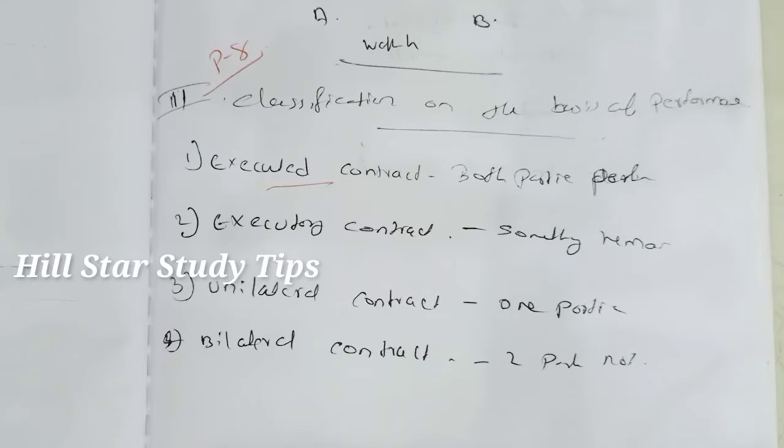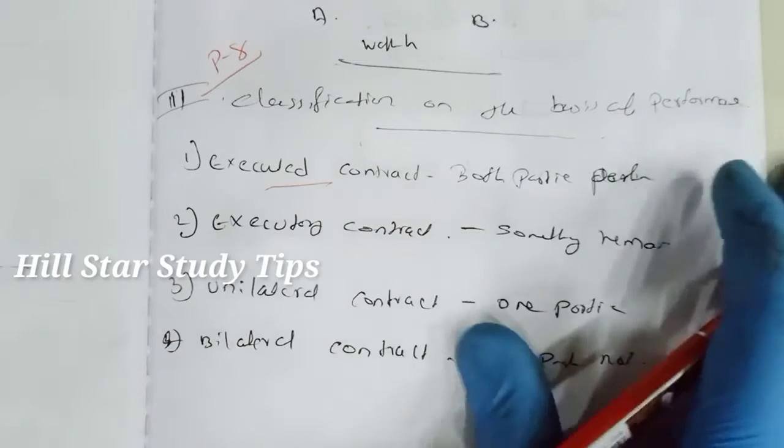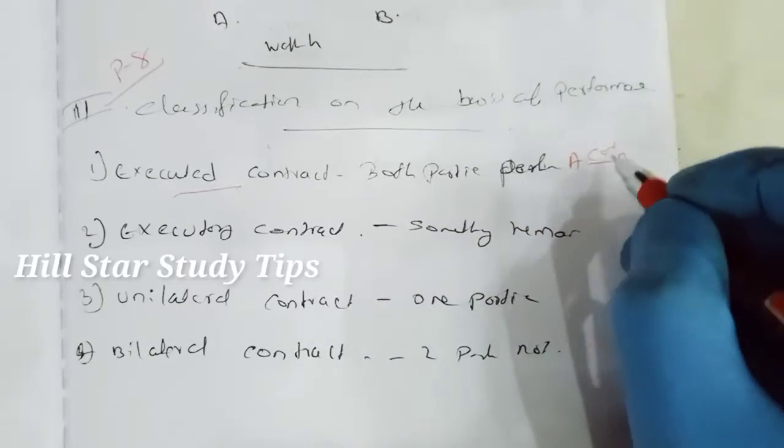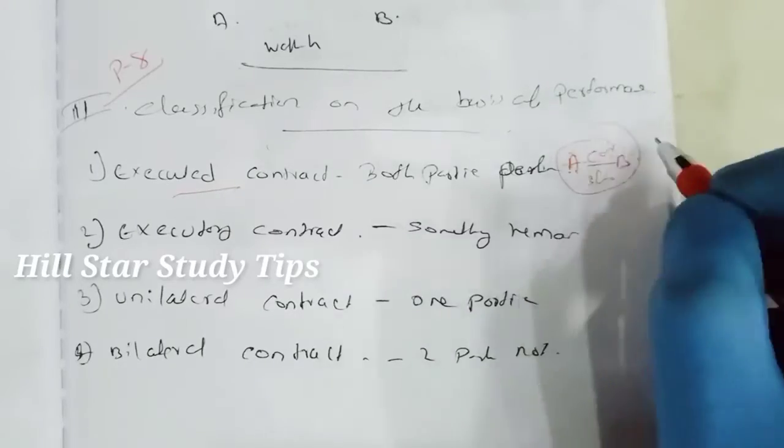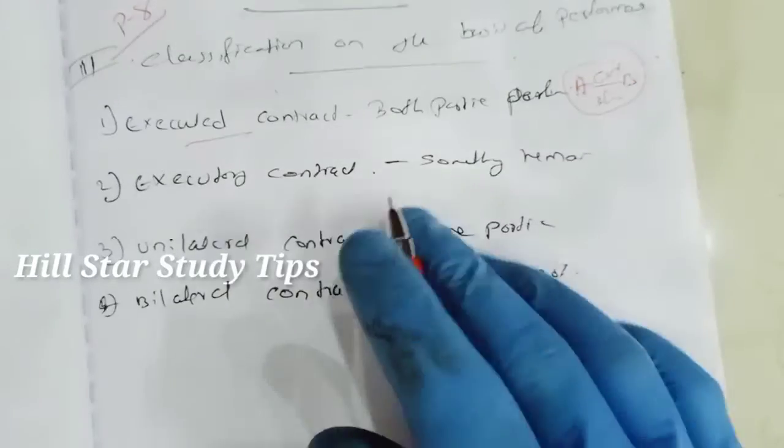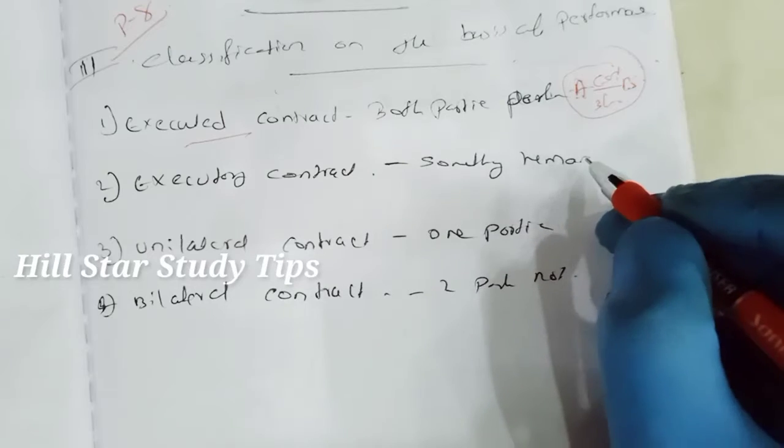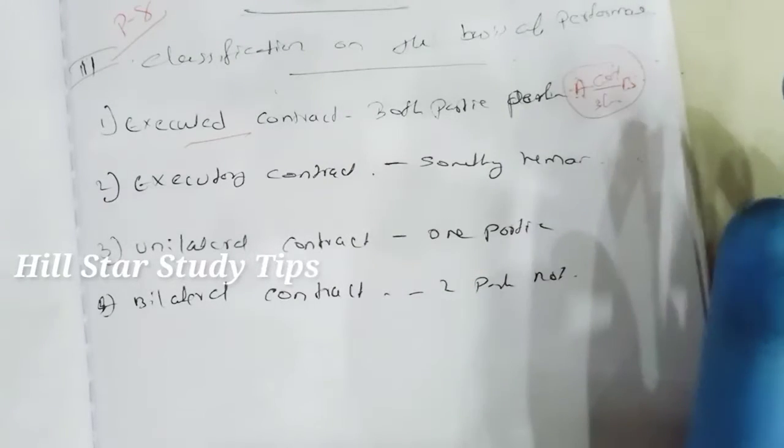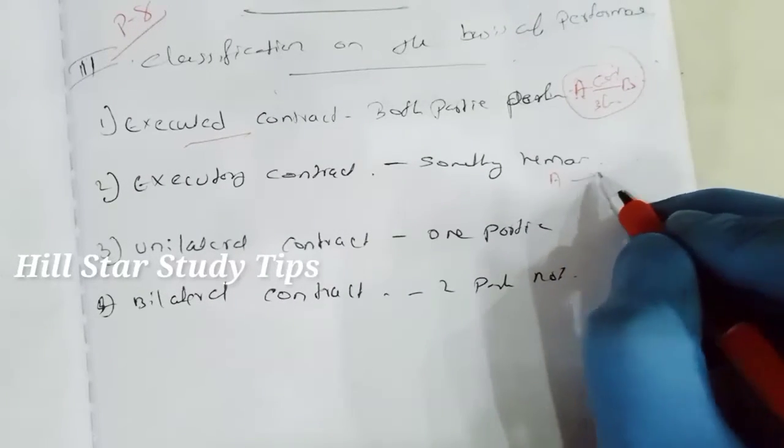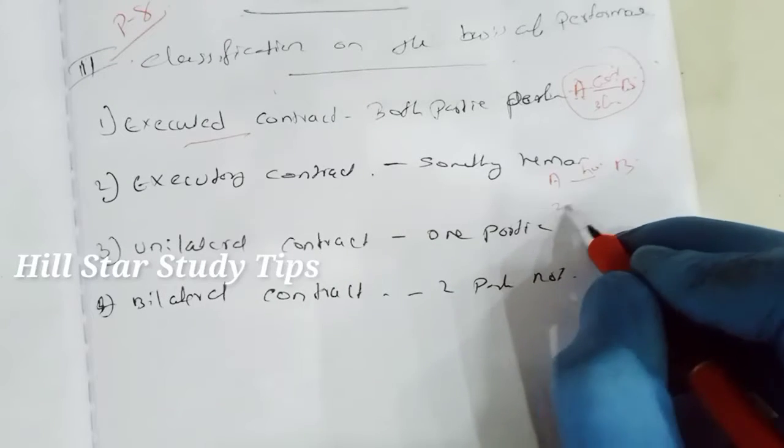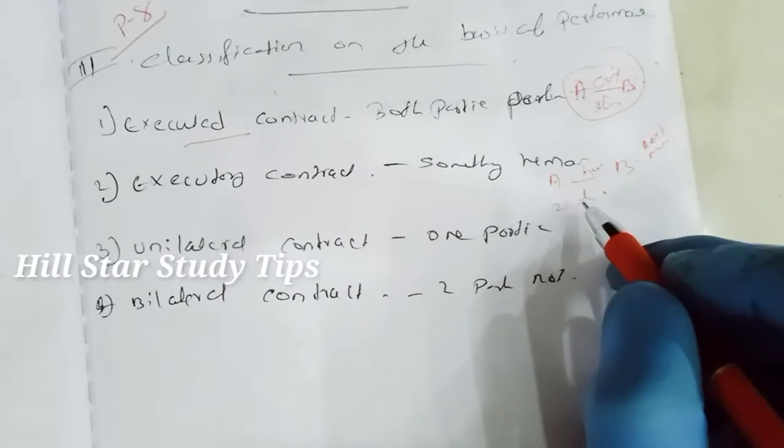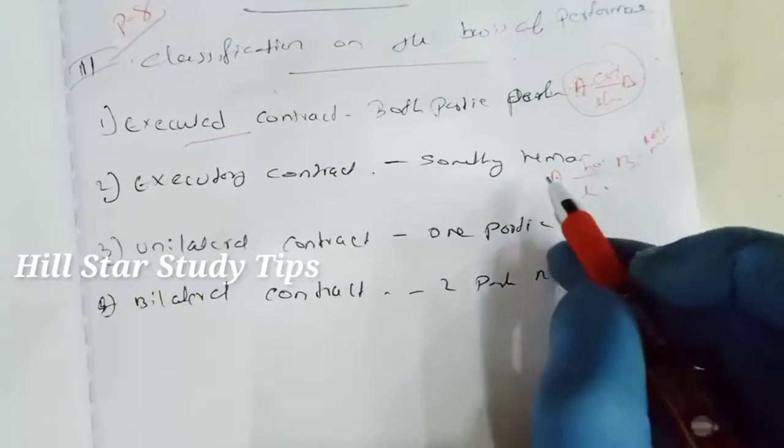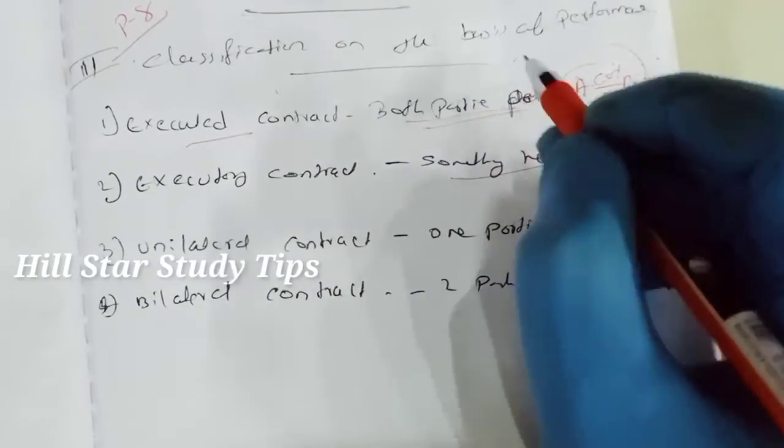If both parties perform their respective obligations under a contract, then it can be termed as an executioner. If you want to say A, B, car 3 lakhs. Something remains. If both parties perform this part, then it can be component.